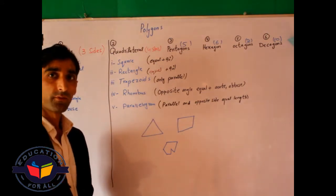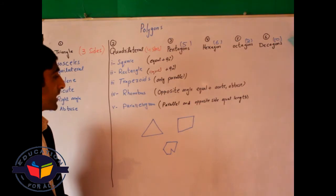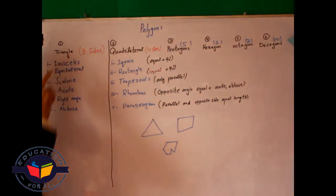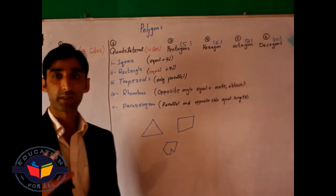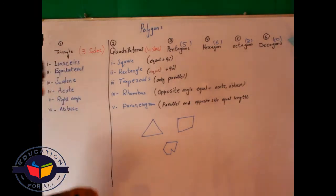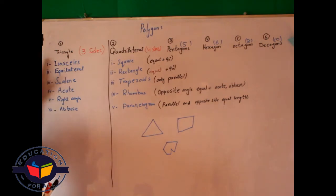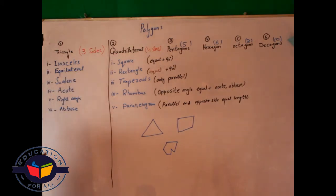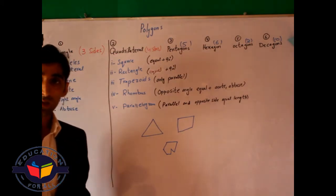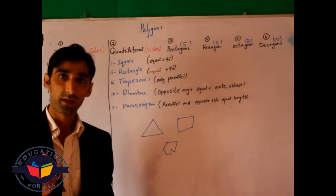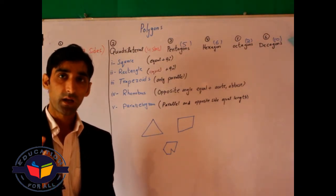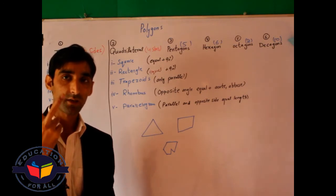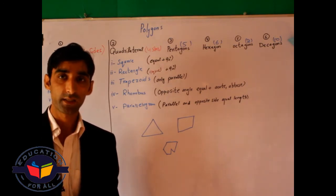We need all of these types in our daily life. The first type is a triangle. A triangle has further six types. What is a triangle? Any closed figure which has three sides is called a triangle.